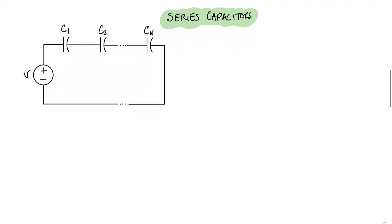Now let's take a look at series capacitors. In this case I have drawn a circuit with a voltage source whose value is v driving capacitors that are in series: C1, C2, ... up to Cn. I've chosen to drive this with a voltage source because the current through this series set of capacitances will be the same. Each one of the capacitors will have a voltage drop across it — the first is v1, the second is v2, and the nth one is vn.